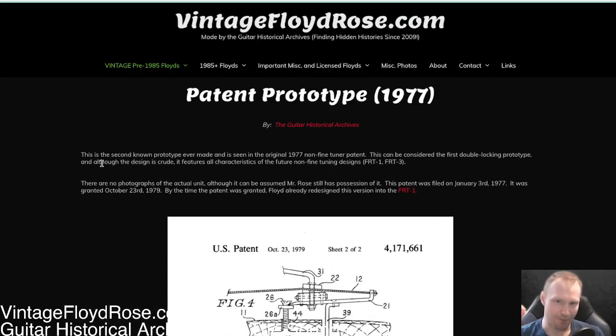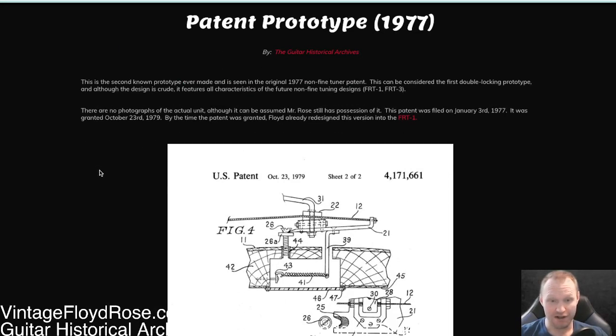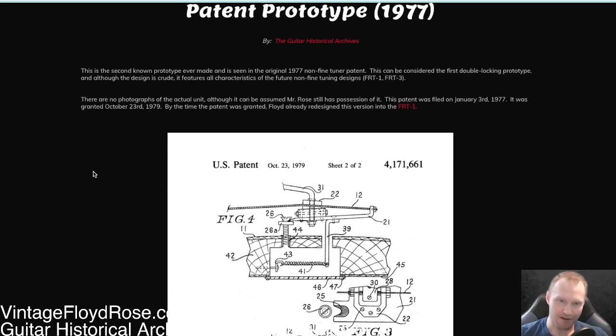Let's talk about the patent prototype made around approximately 1977. This is what you see, and it's called the patent prototype because it was actually in the patent in 1979, although it was filed in 1977. So I believe it was created in 1977.